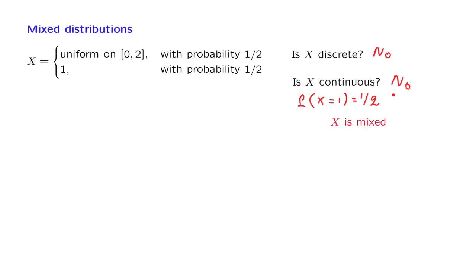More generally, we can have a situation where the random variable x, with some probability, is the same as a particular discrete random variable, and with some other probability, it is equal to some other continuous random variable.